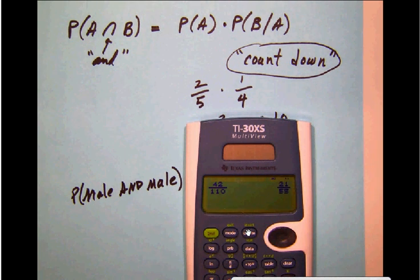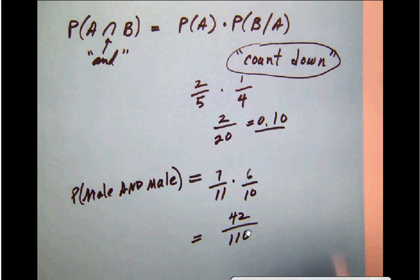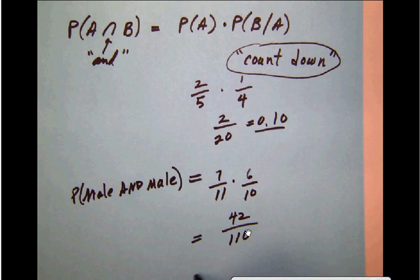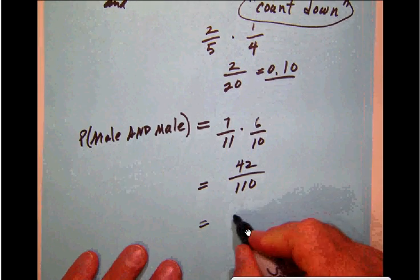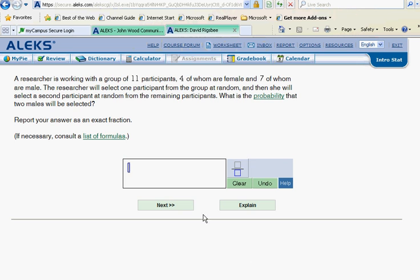You can simply enter the fraction 42 over 110 and then just hit the enter button, and it'll go ahead and reduce that for you to 21/55 right away. We want to write that answer as 21/55, go back over to ALEKS and enter that as an exact fraction: 21 over 55.